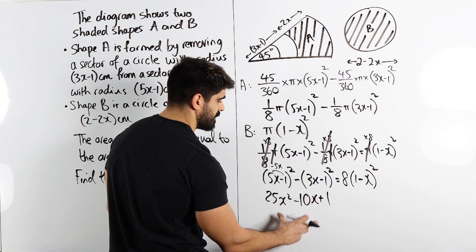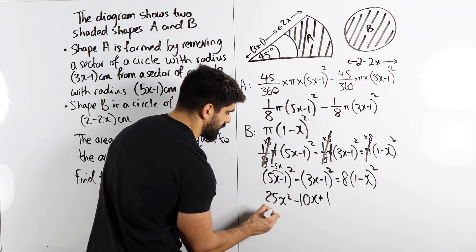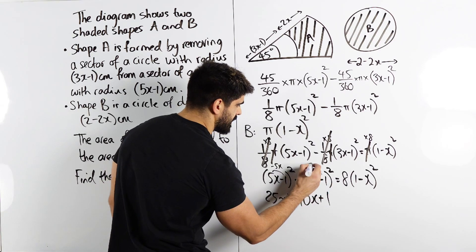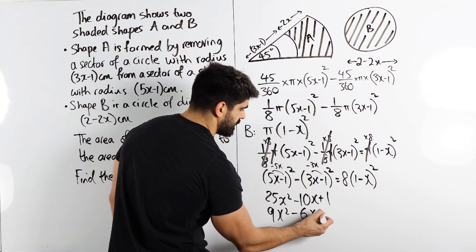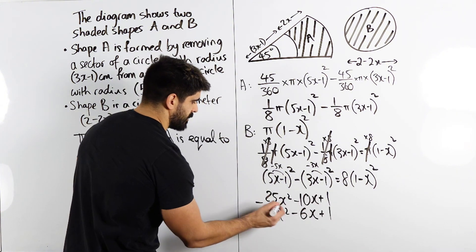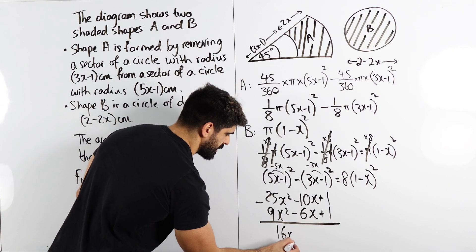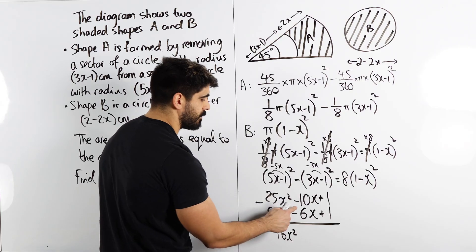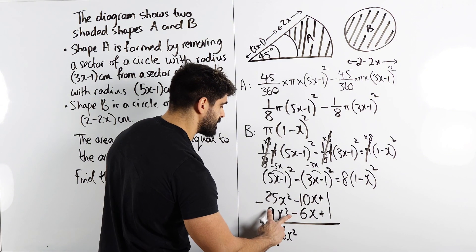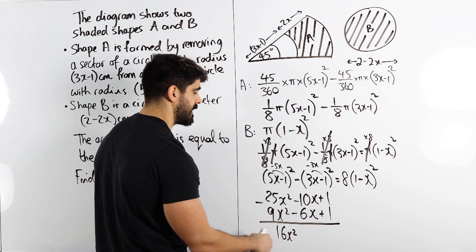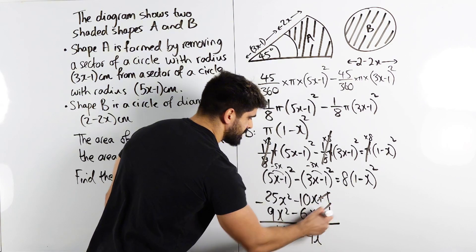Now doing the same for (3x minus 1) squared: 3x squared gives 9x squared. Multiplying gives minus 3x, doubled gives minus 6x. And then plus 1. Now subtracting: 25x squared minus 9x squared is 16x squared. For the x terms: minus 10 minus (minus 6) is minus 10 plus 6 which is minus 4x. The constant terms cancel: 1 minus 1 equals 0.